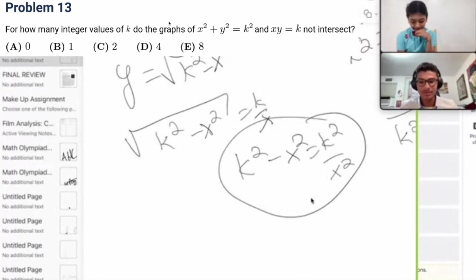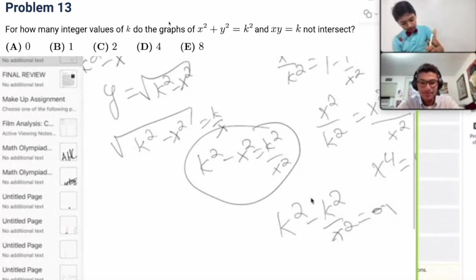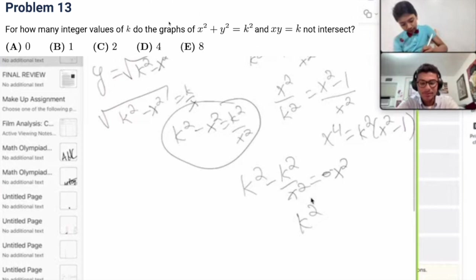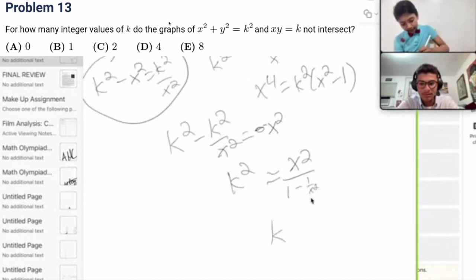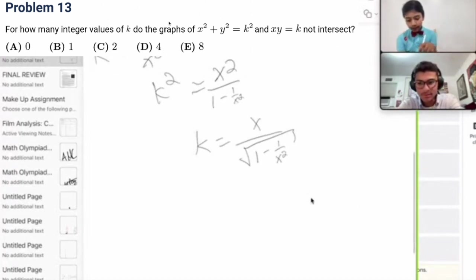So, alright, let's just solve for k really quick. So, k squared is equal to x squared over 1 minus 1 over x squared. So, k is equal to x over the square root of 1 minus 1 over x squared. So, for how many integers k is this just invalid? How many integers k does this not work out?